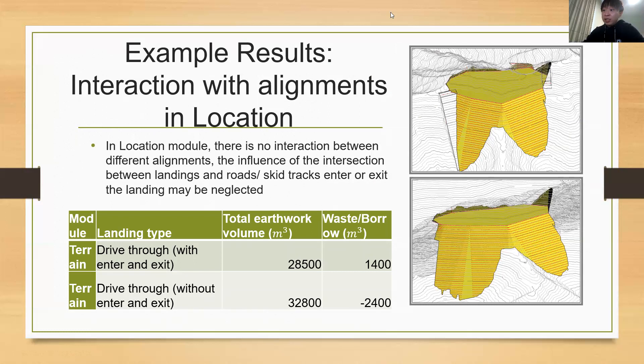It was also found that in the current version of location module, it is unable to take the interaction between two alignments into account. The earthwork volume in the area of the interaction between landing and the road entry or existing landing may be estimated twice if you only use location module. The figure gives an example of the volume estimation difference between the landing with road intersection included and excluded. This is done by importing a part of road from location into terrain at the same elevation level as the landing surface to override the original terrain with the road design. The table shows that the earthwork volume decreased about 4000 cubic meters and changed from borrow to waste.